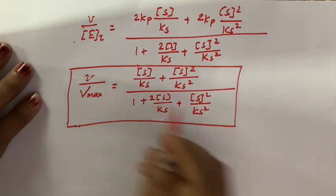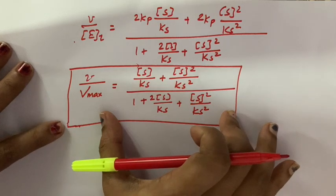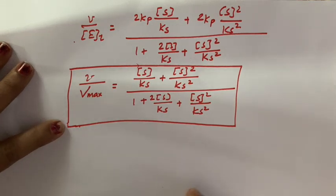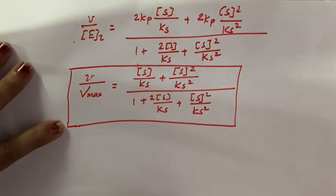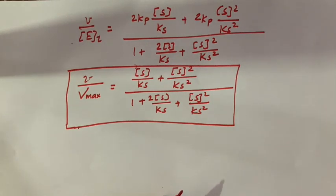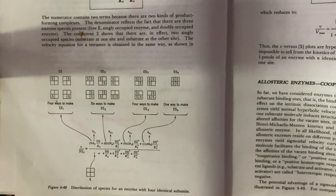In cooperative binding, alpha comes into the picture because the binding affinity changes once a substrate is already bound. The above equation was for a dimer with 2 binding sites. Now let us consider a tetramer — if there are 4 sites, what will the equation look like? Let us look at the diagram.